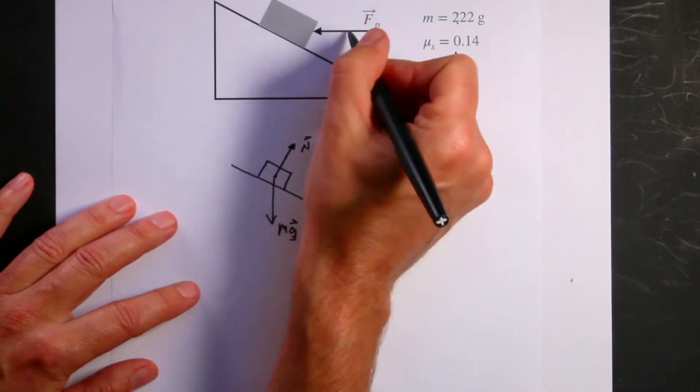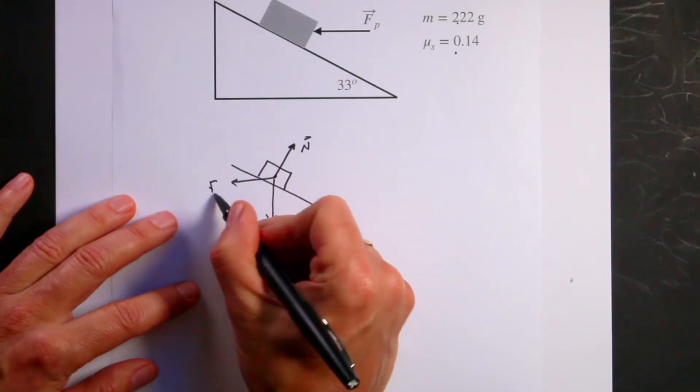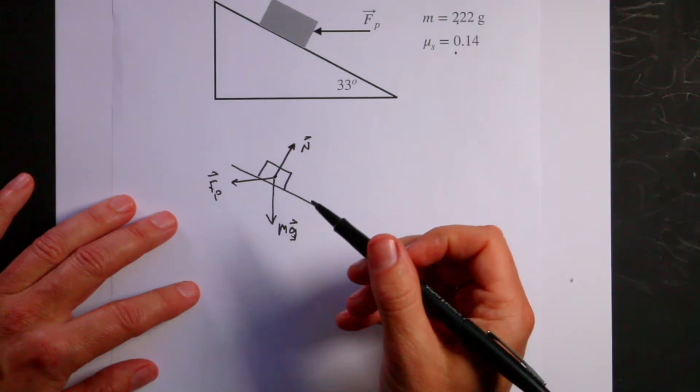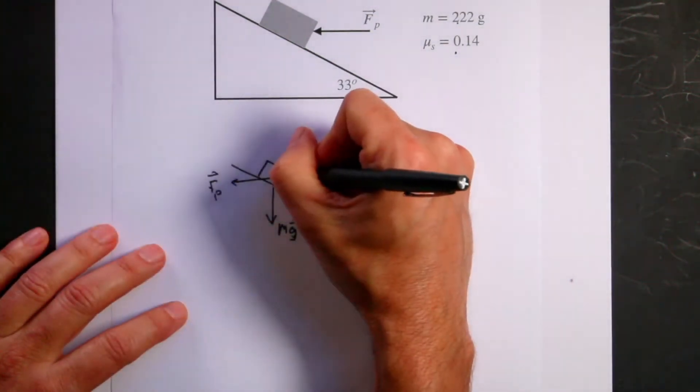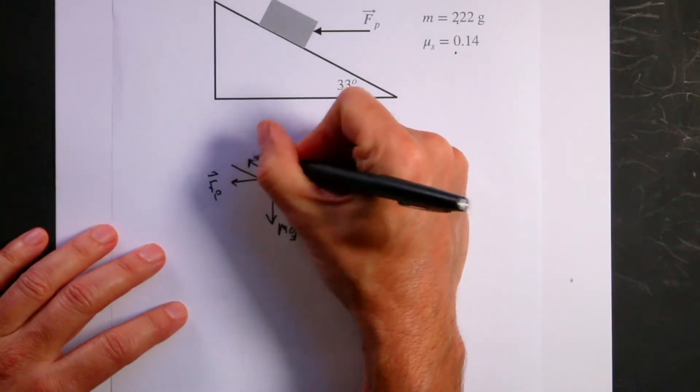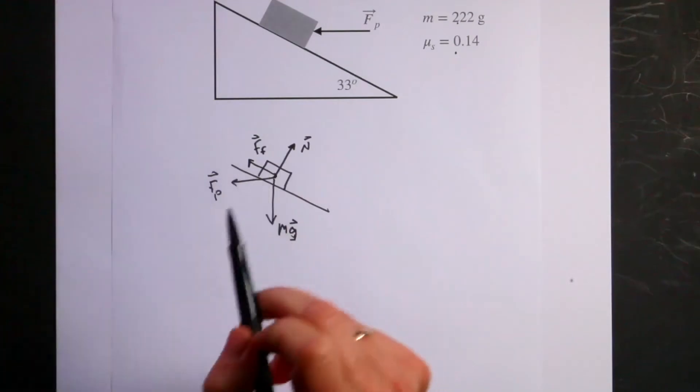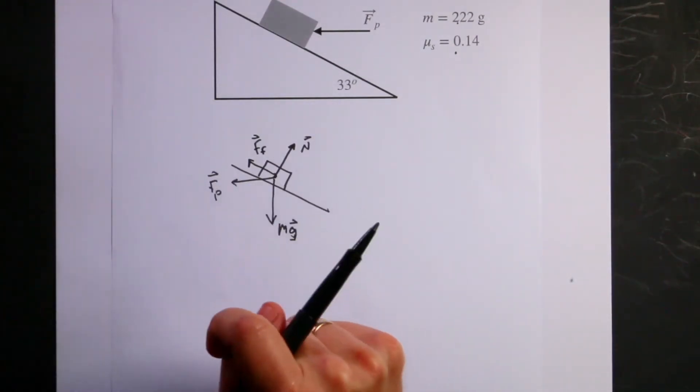Next I have that force that I'm pushing, Fp, I don't know what that is. Finally, if I'm trying to prevent it from sliding down the incline, then friction would be pushing up the incline. This is going to be the maximum friction force because I want to push the minimum amount to keep it from sliding.